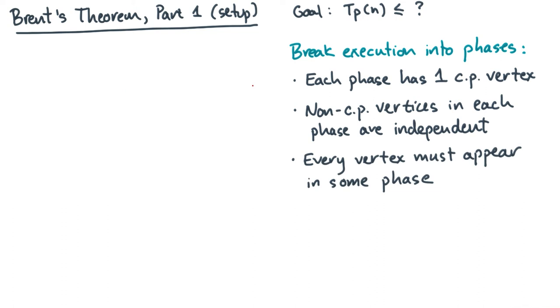There's a third condition, which is that every vertex has to be in some phase, and furthermore, it should only be in one phase. Suppose this is our DAG, and let's say we've divided it into phases.